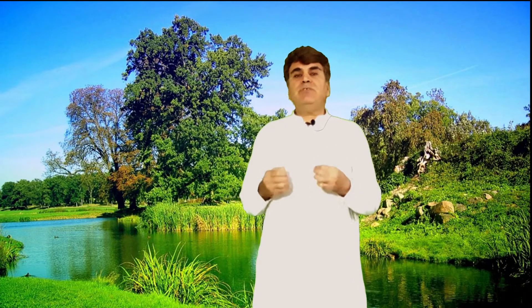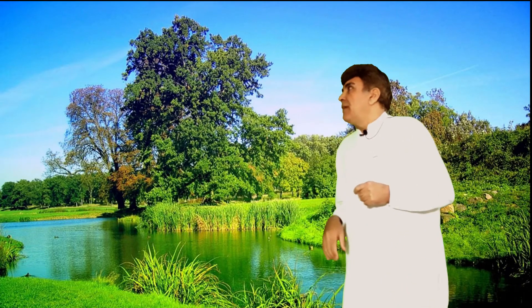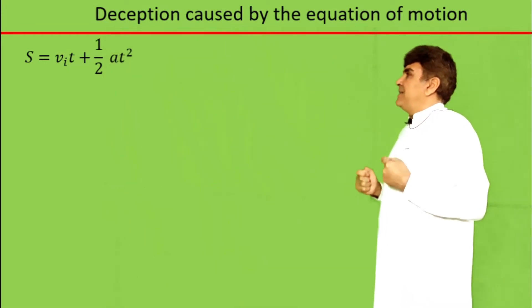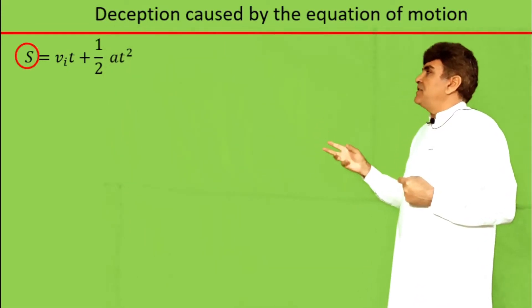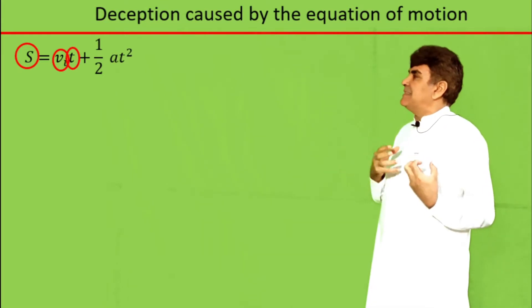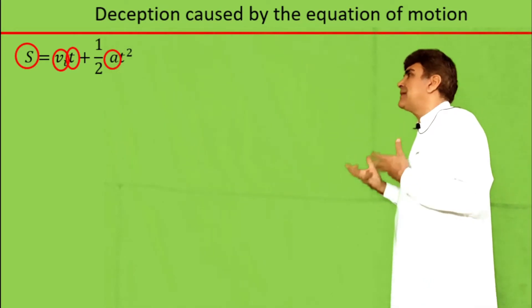We know that the initial velocity, the acceleration, and the distance covered by a body in time t are linked to each other through the equations of motion. For example, consider this one equation where S stands for distance, vi stands for the initial velocity, t for time taken to cover distance S, and a is the acceleration during the time t.